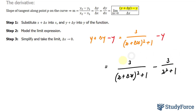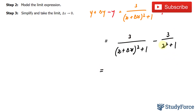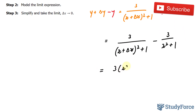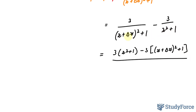The next thing I'll do is find a common denominator to combine these two fractions. All you do is multiply the denominators together, then take this denominator and multiply it to the negative 3, and this denominator and multiply it to the 3. If you do that correctly, you should end up with 3 bracket x squared plus 1, and this denominator times negative 3 gives negative 3 bracket x plus delta x squared plus 1, all over this denominator times this denominator.